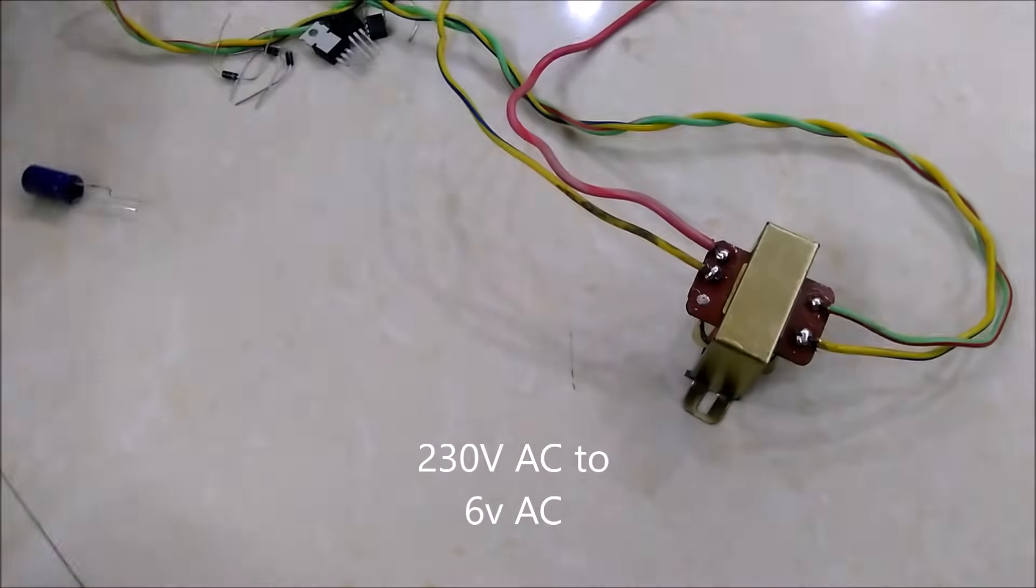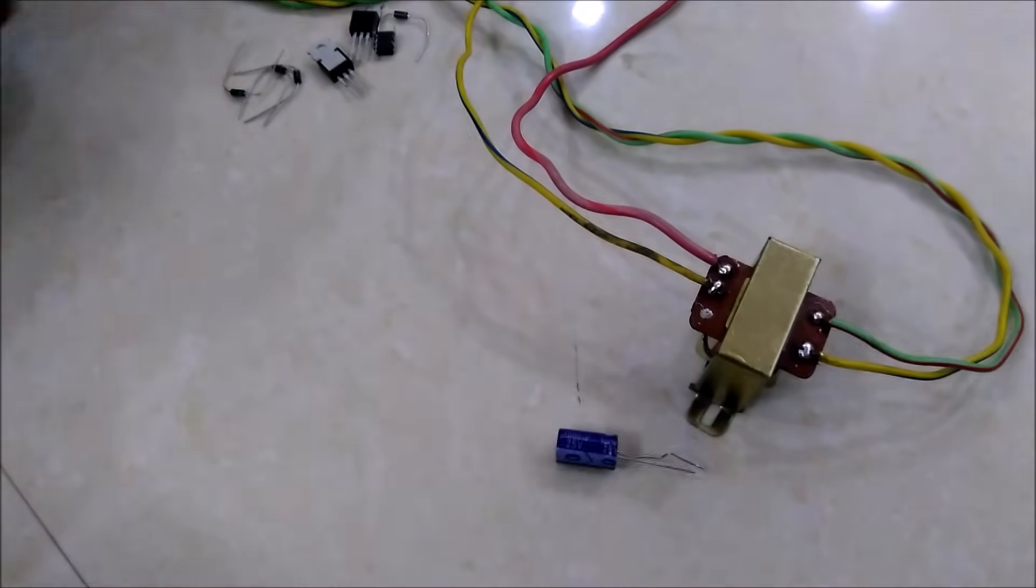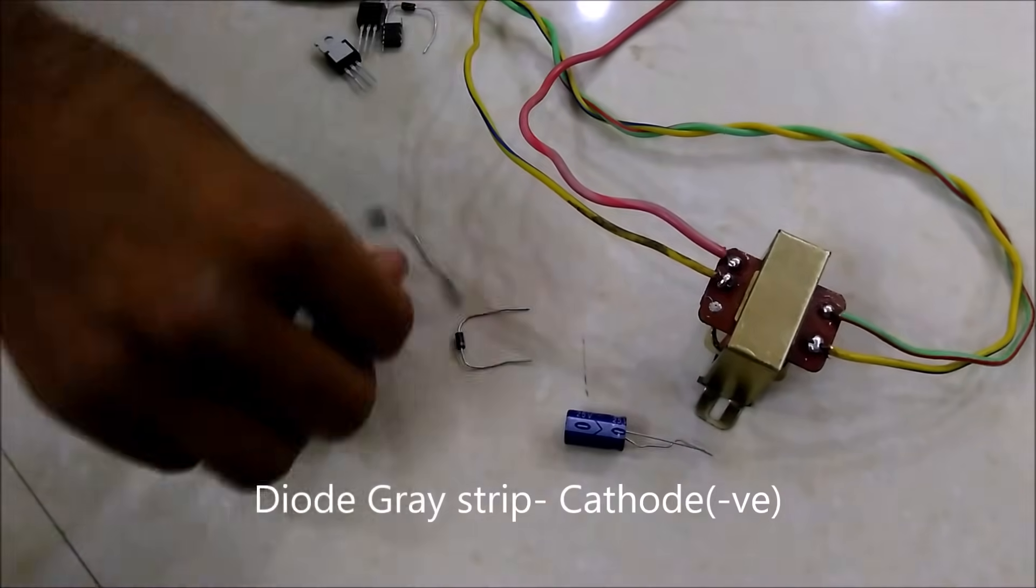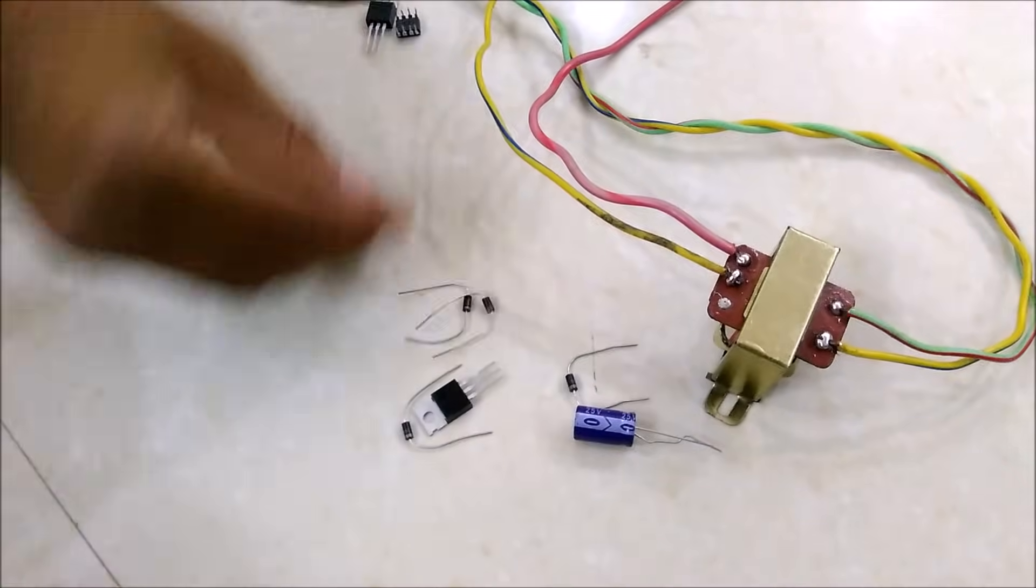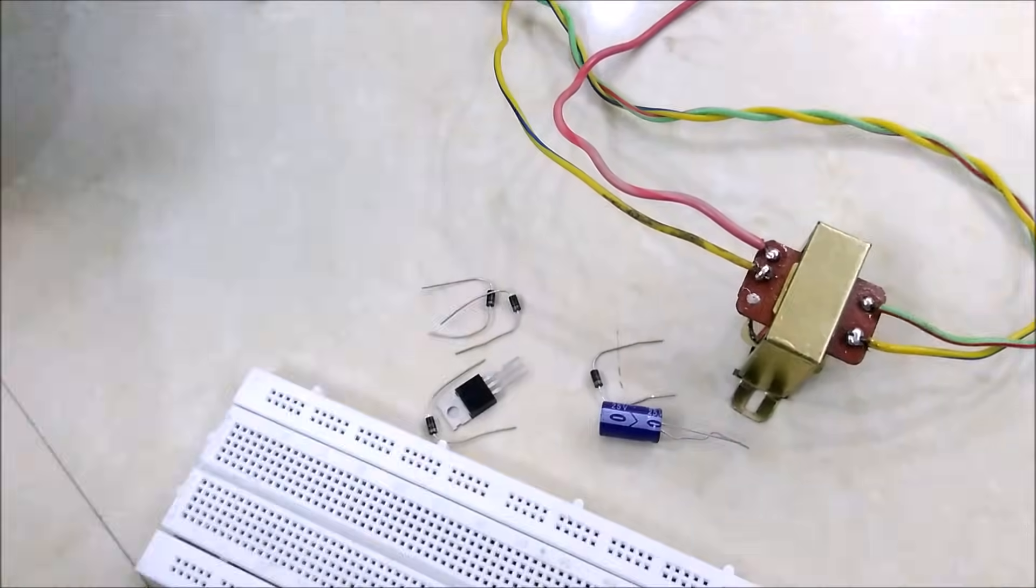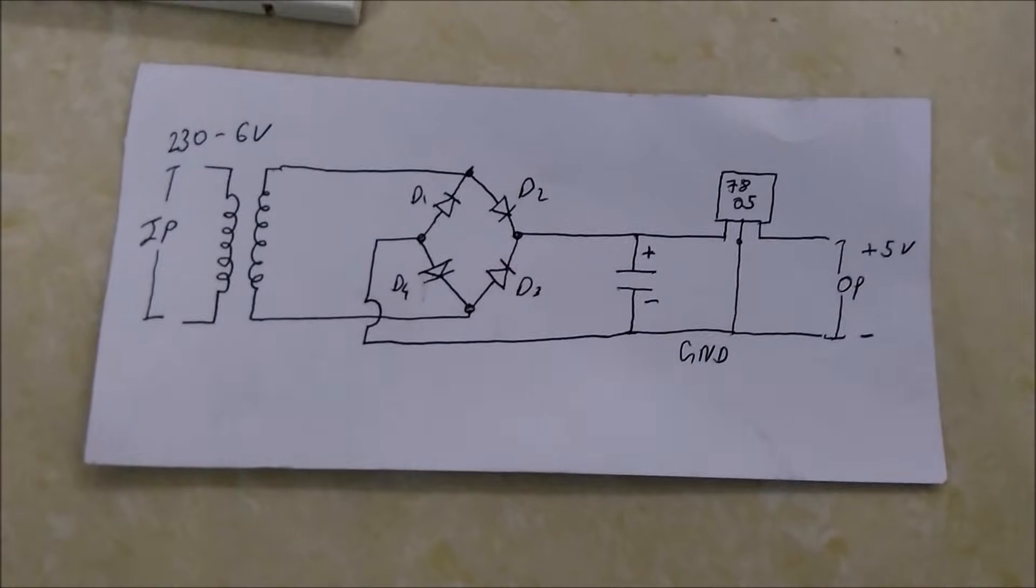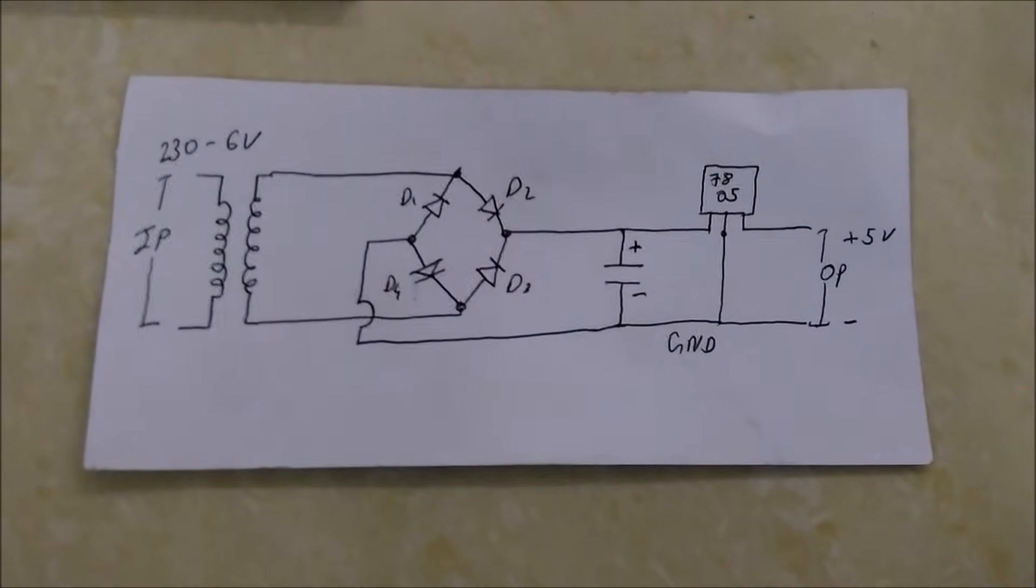Hello friends, today we are going to make a 5-volt DC regulated power supply. For this, we need the following items: one transformer, one capacitor (1000 microfarad), four diodes, one 7805 IC, and one breadboard. This is the circuit for the 5-volt regulated power supply. Now we'll start making the circuit.